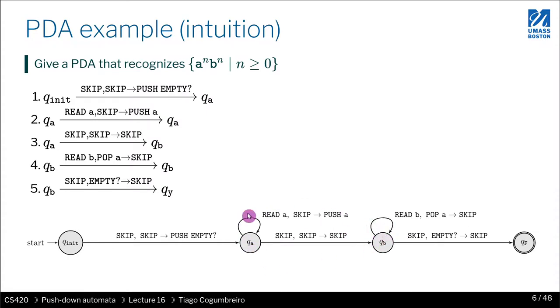So if you think of it as a counter, whenever you read A, you increment this counter. So when you get to B, you want to read B's only if you can decrement the counter. But then once you reach zero, you are ready to move to the final state.